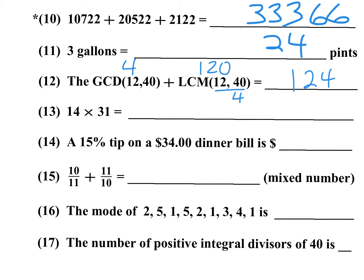Number 13: 14 times 31. You can do 14 times 1 is 14, write a 4 carry 1; 14 times 3 is 42 plus the carry is 43. Another way is FOIL: outer and inner 12 plus 1 is 13, write 3 carry 1; first times first 1 times 3 is 3 plus carry is 4. Either method works.